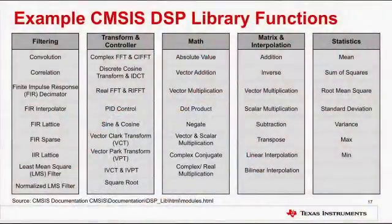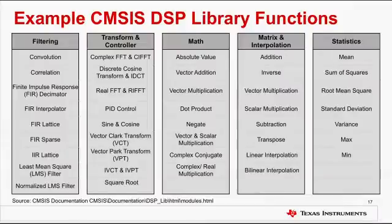The CMSIS DSP library is divided into a number of modules such as basic math functions, fast math functions, filters, transforms, and matrix and interpolation functions, each covering a specific category of function calls. The library also has separate functions for performing operations on 8-bit integers, 16-bit integers, 32-bit integers, and 32-bit floating-point values. Some of those functions are shown on the screen.